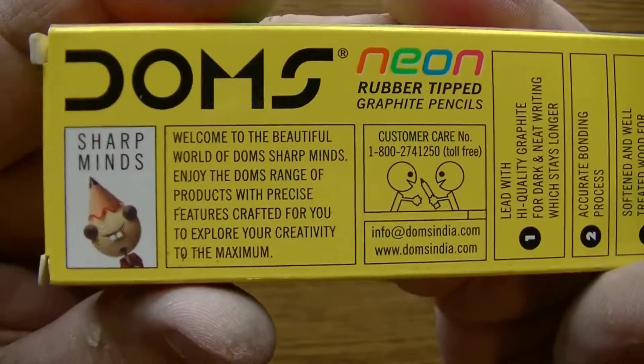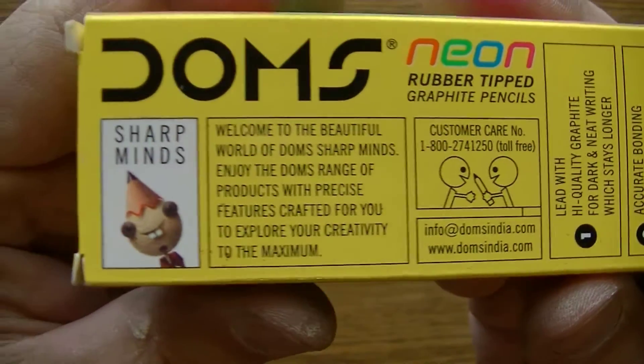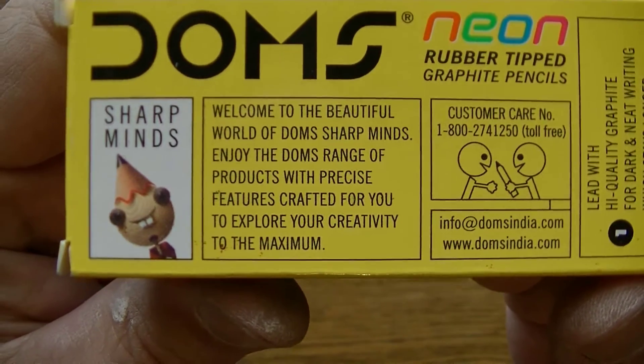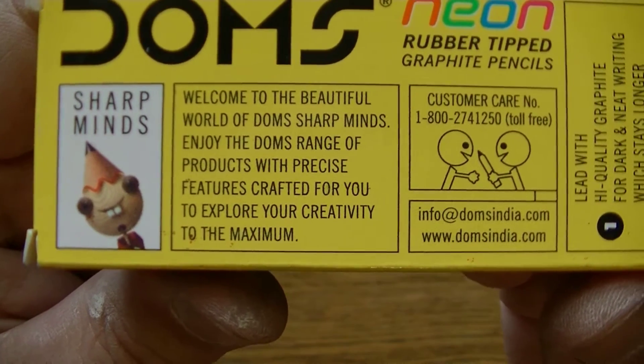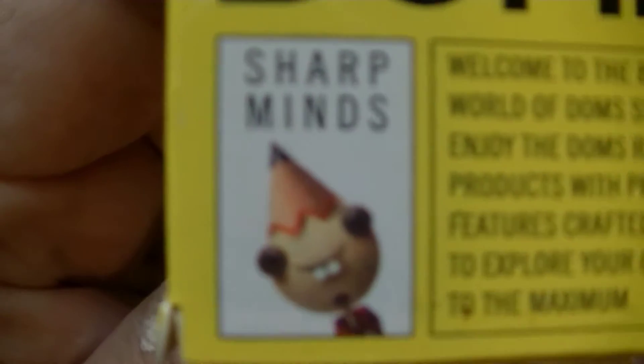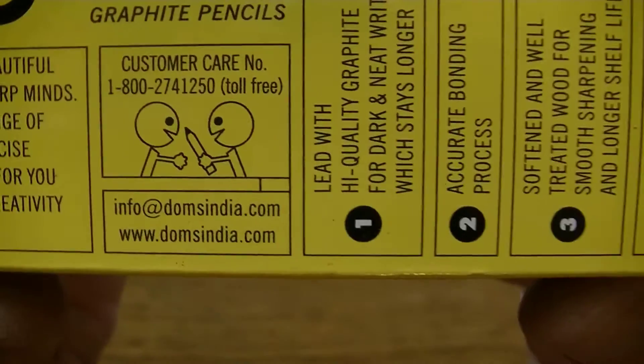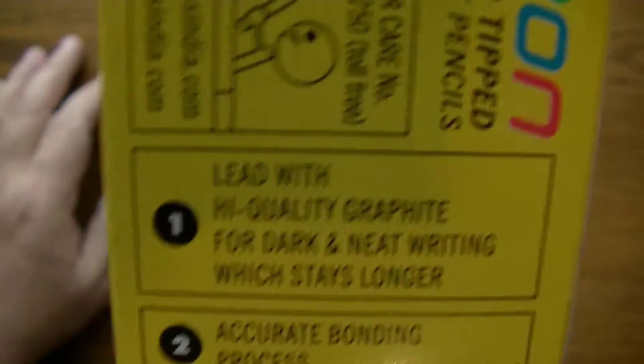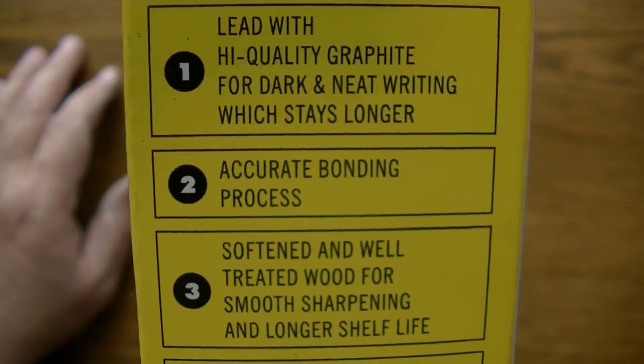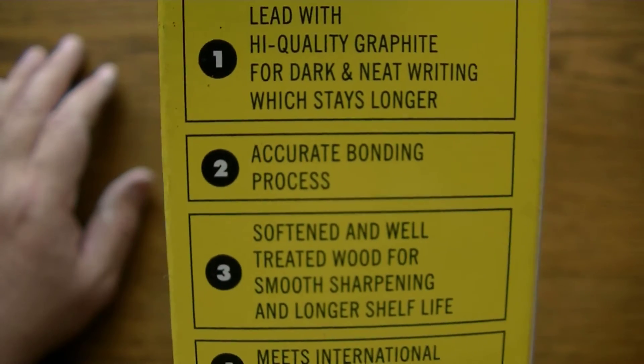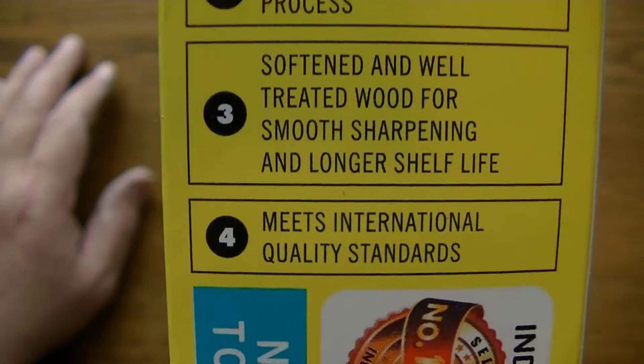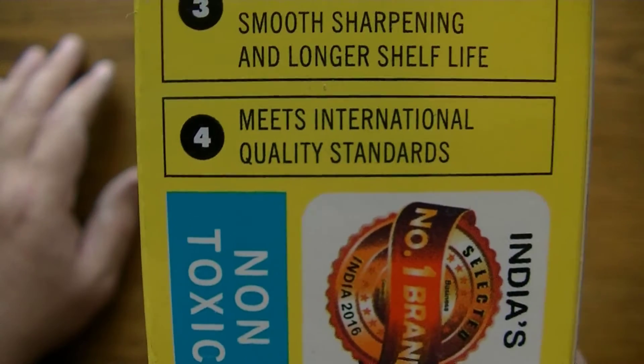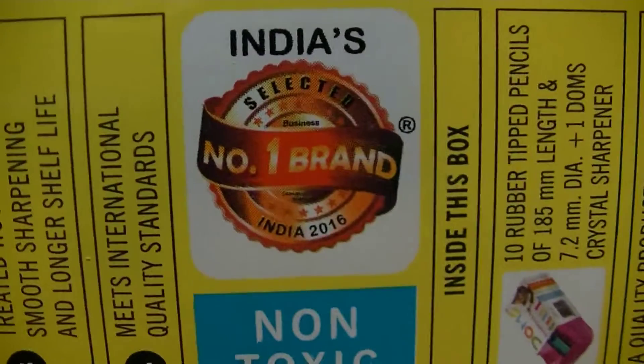Anyway, now that I've thrown the disclaimer out there and you can try not to pay too much attention to the fingers themselves, see here it says welcome to the beautiful world of Dom's sharp minds. Enjoy the Dom's range of products with these precise features crafted for you to explore your creativity to the maximum. Sharp minds, yes. And you have a website there and some information here. Number one: lead with high quality graphite for dark and neat writing which stays longer. As opposed to what? I don't know. Accurate bonding process. Softened and well-treated wood for smooth sharpening and longer shelf life. We shall see. And it meets international quality standards, which are I have no idea.